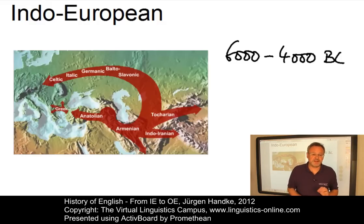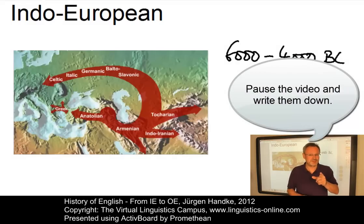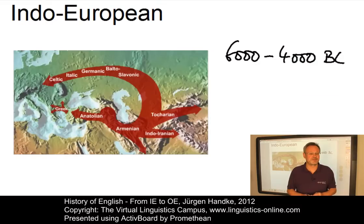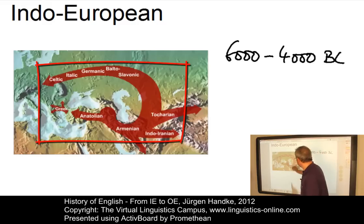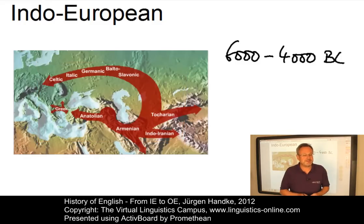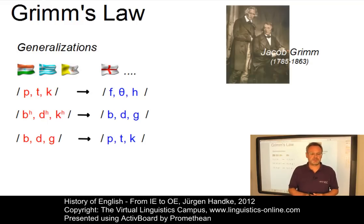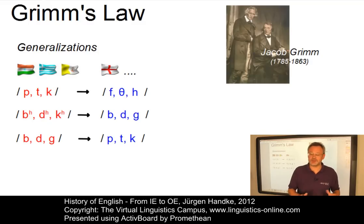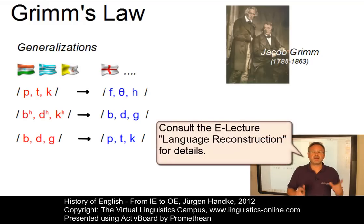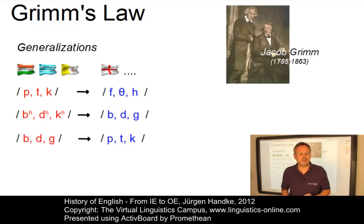Do you know any non-Indo-European languages that are spoken in Europe? You might want to pause the e-lecture here and I will tell you later. The languages of the Indo-European family — and here you can see some of the early languages which are now families in their own right — are phonologically related in a principled way. This phonological relationship was first formulated by Jacob Grimm in 1822 and has been a continuing subject of interest and investigation to linguists.